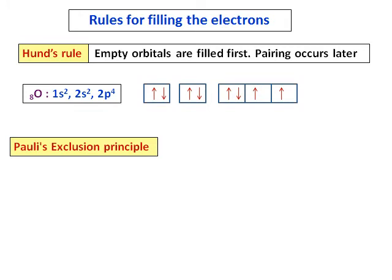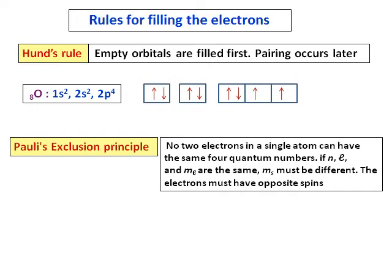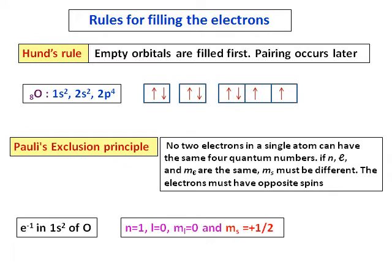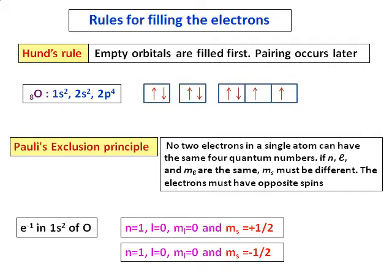The third rule is Pauli's exclusion principle: no two electrons in a single atom can have the same four quantum numbers. In other words, n, l, and ml can be the same, but the spin quantum number must differ — one electron has +1/2 and the other has −1/2. For the two electrons in 1s2 of oxygen, n, l, and ml are identical but spins are opposite.